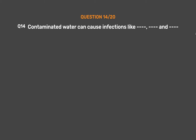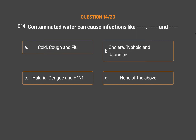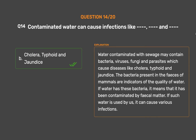Question number 14: Contaminated water can cause infections like dash. Option A: Cold, cough and flu. Option B: Cholera, typhoid and jaundice. Option C: Malaria, dengue and H1N1. Option D: None of the above. The correct answer is Option B: Cholera, typhoid and jaundice. Water contaminated with sewage may contain bacteria, viruses, fungi and parasites which cause diseases like cholera, typhoid and jaundice. The bacteria present in the feces of mammals are indicators of the quality of water. If water has these bacteria, it means it has been contaminated by fecal matter, and if such water is used by us, it can cause various infections.